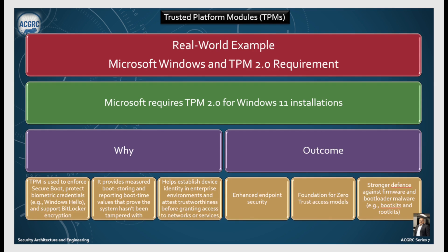In a real world example, Microsoft requires TPM 2.0 for Windows 11 installation. TPM is used to enforce secure boot, protect biometric credentials, and provide measured boot by storing and reporting boot-time values that prove the system hasn't been tampered with. It helps establish device identity in enterprise environments and attest trustworthiness before granting access to networks or services. The outcome: enhanced endpoint security, a foundation for the zero trust access model, and stronger defense against firmware and bootloader malware.